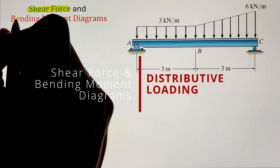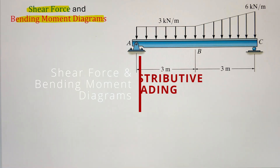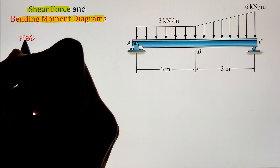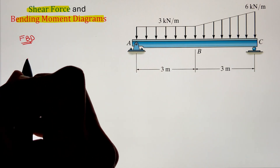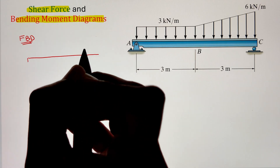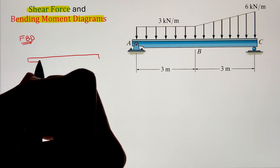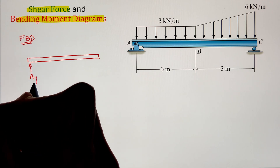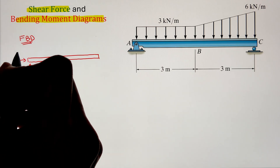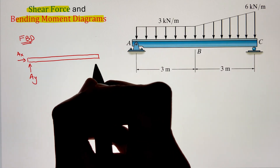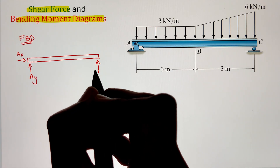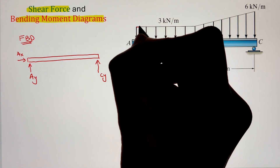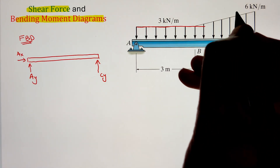To draw the shear force and bending moment diagrams of a simply supported beam with distributive loading, we start by finding the support reactions using the free body diagram. At point A we have a pin support with two reactions: Ay in the vertical direction and Ax in the horizontal direction. At point C we have a roller with only one vertical reaction Cy.